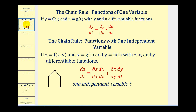Remember from calculus one, if we have y equals f of u and u equals g of t, to determine dy/dt, we found the product of dy/du and du/dt. And we can do something similar when we have a function in terms of two variables with one independent variable.